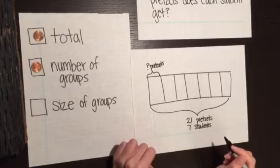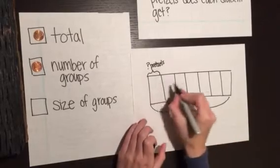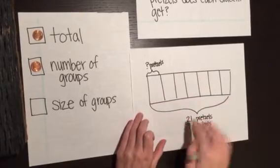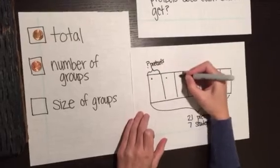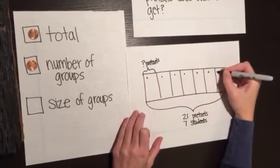Now in order to solve it, what I need to do is start putting one pretzel in each box until I get to my total. One, two, three, four, five, six, seven.